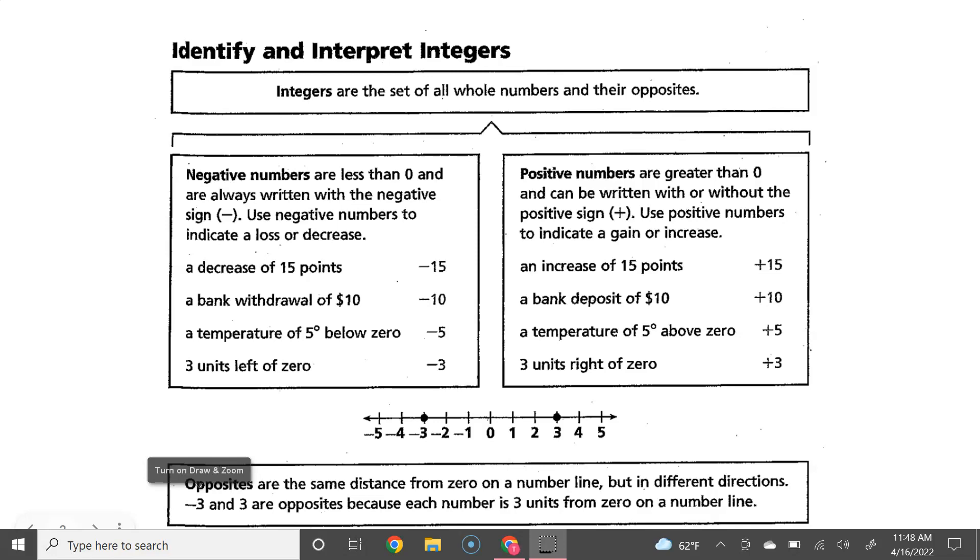Opposites are the same distance from zero on a number line, but in different directions. For the example here, you can see that negative 3 and 3 are opposites because each number is 3 units from zero on a number line. You can see that 3 is 3 units to the right, and negative 3 is 3 units from the left.